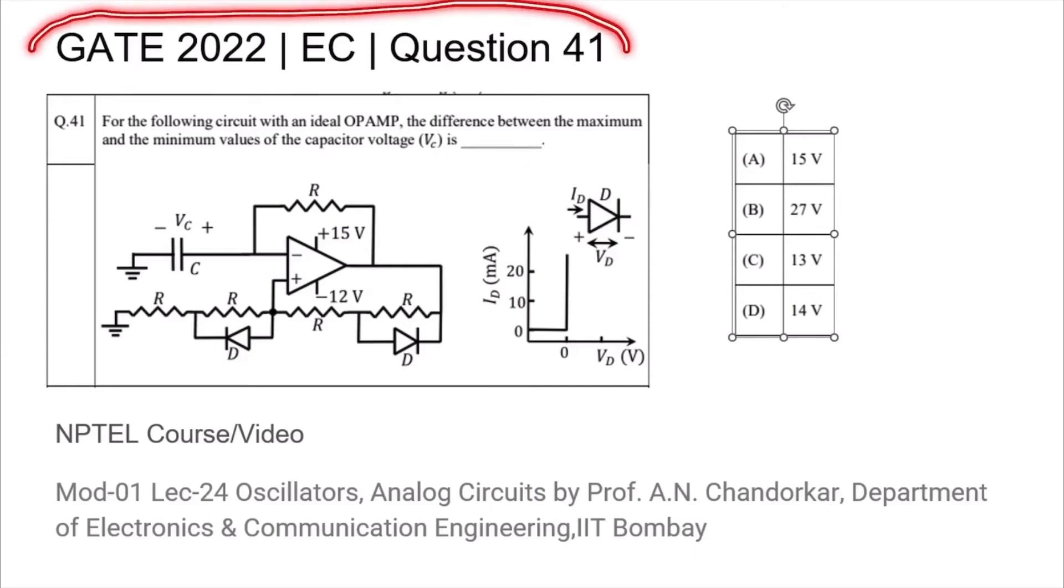This is question 41 from the GATE 2022 EC paper where we are given the following circuit with an ideal op amp and are asked to find out the difference between the maximum and minimum values of the capacitor voltage.